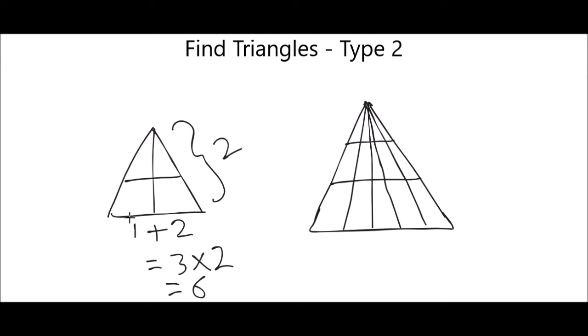Three into two, that equals to six. There are total six number of triangles in this first image. So we'll check it: one, two, three, four, five, and six. Total six, okay?